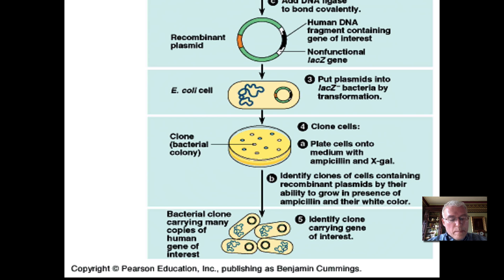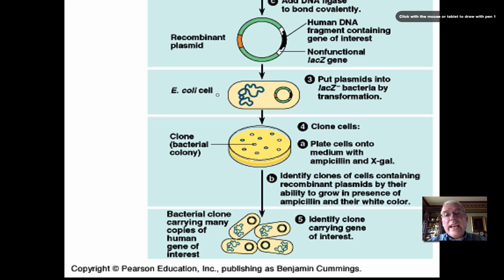Then we're going to take our plasmid, which has the gene of interest inserted into it, and we're going to mix it into a culture containing our E. coli bacteria. Remember, E. coli has its own DNA in a loop called the nucleoid. If everything works and the E. coli takes up the plasmid, it will now acquire the ability to resist ampicillin — it'll be ampicillin resistant — but it will not have the ability to digest X-gal, because its LAC-Z gene is broken because that's where we inserted the gene of interest.